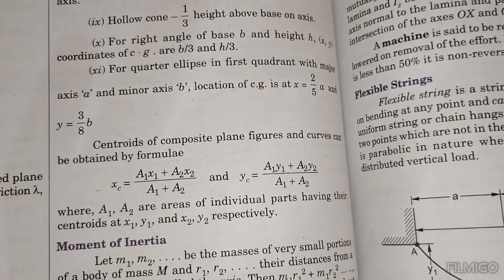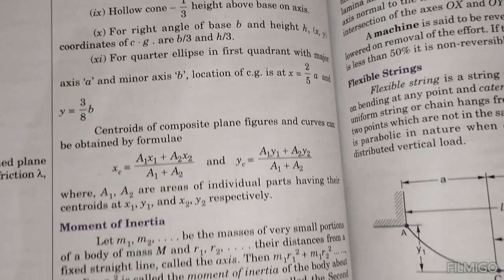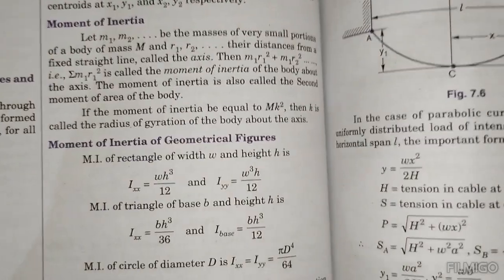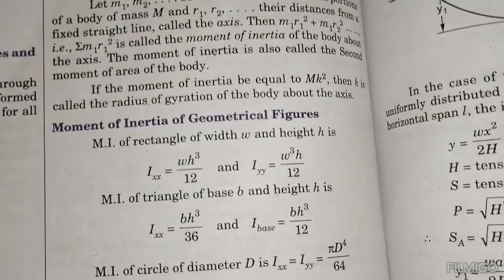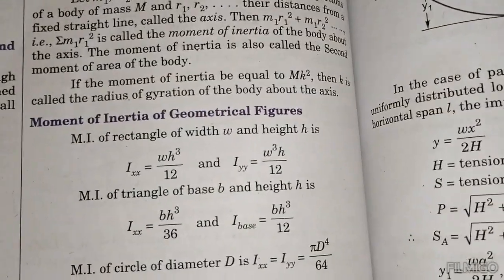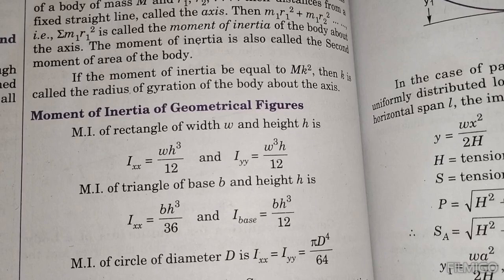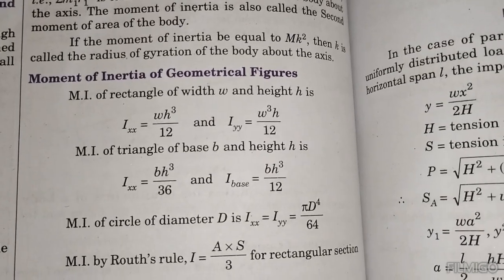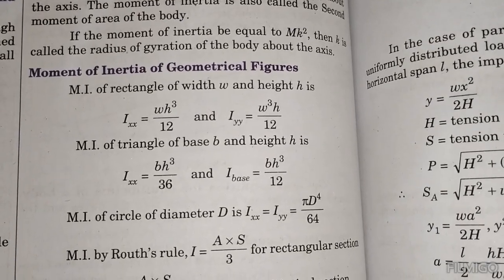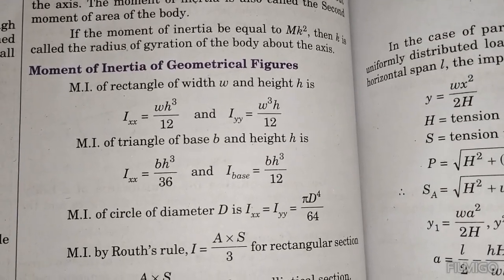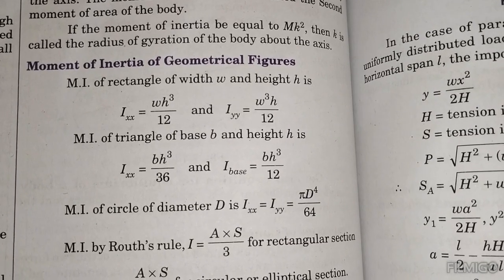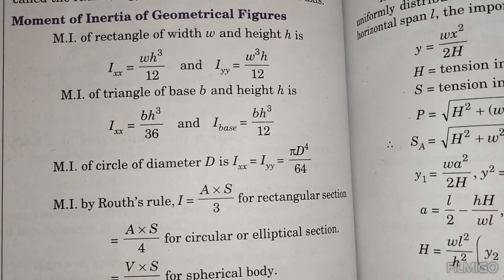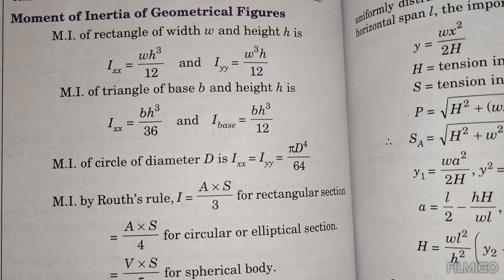For an ellipse, the centroid coordinates are x equals 2a divided by 5 and y equals 3b divided by 8 for a quarter ellipse. For composite bodies the centroid x-bar equals the sum of (area times distance) divided by total area. Moment of inertia: for a rectangle I_xx equals w h cubed divided by 12, I_yy equals w cubed h divided by 12. For a triangle about the base: I equals b h cubed divided by 12; about the centroidal axis: b h cubed divided by 36.